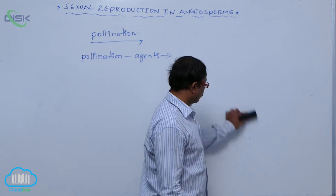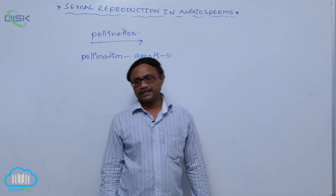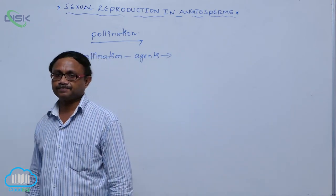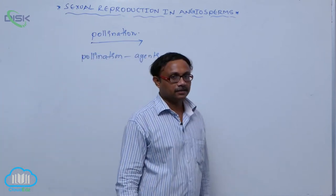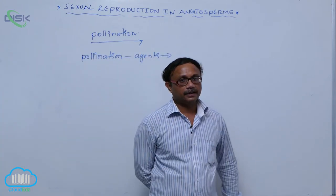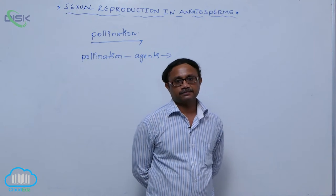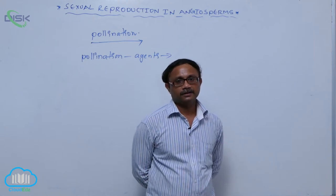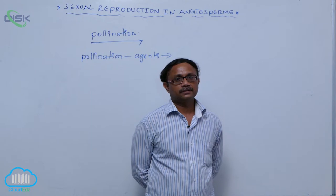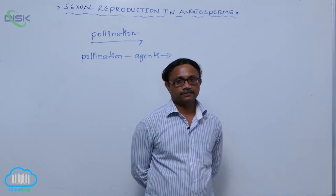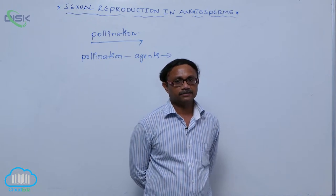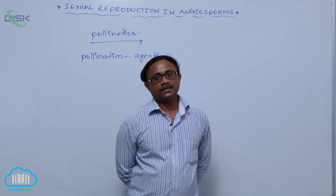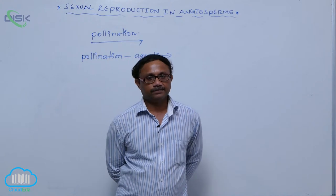Generally, in lower plants, water is used as a medium for the transfer of pollen grains. For example, in Bryophyta and Pteridophyta, male gametes swim in water and reach the egg cell.